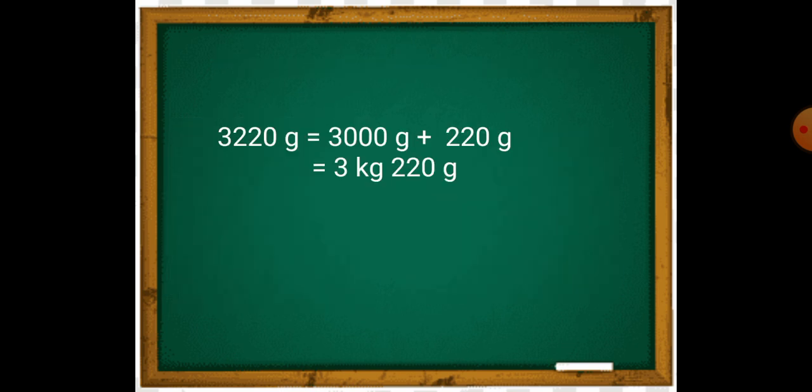We can rewrite 3,800 grams as 3,000 grams plus 220 grams. We know that 1,000 grams is equal to 1 kg.